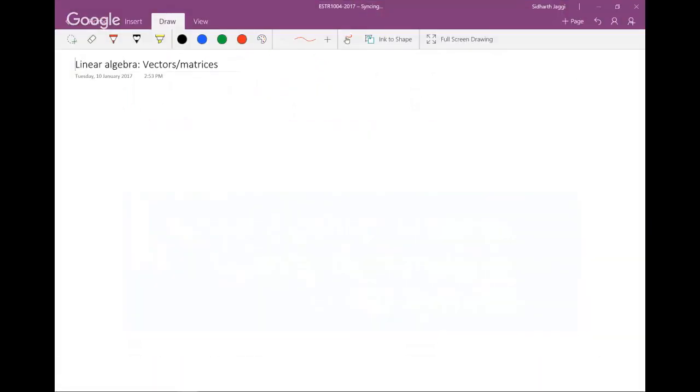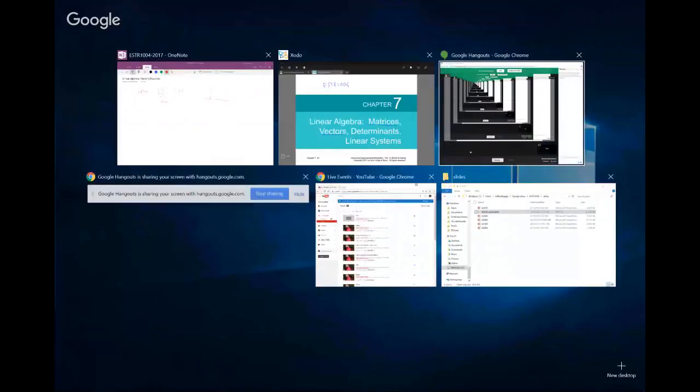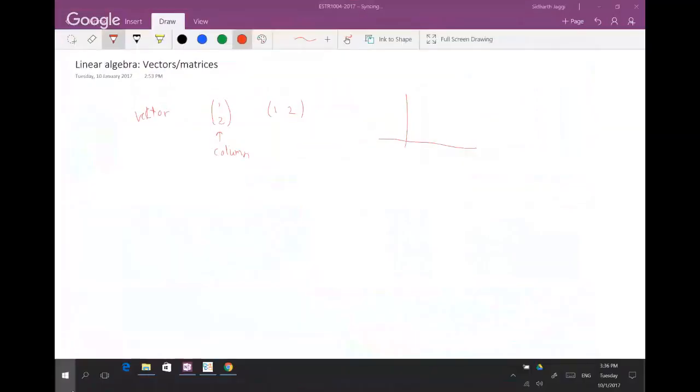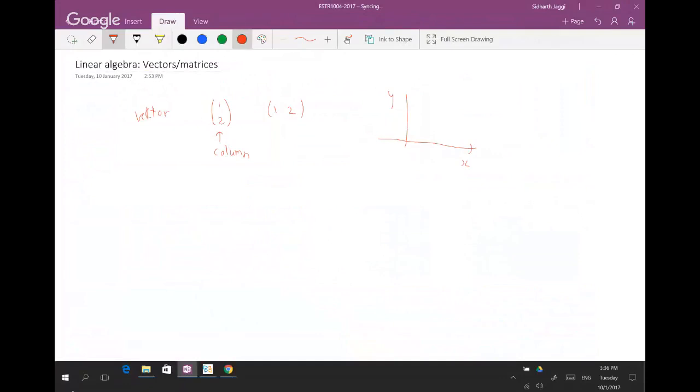So when you think of a vector, you think of something like 1, comma 2. It could be a column vector, it could be a row vector. And geometrically this is nothing but—this is the x-axis, this is the y-axis—then one step in this direction and two steps in this direction, so this is a vector.